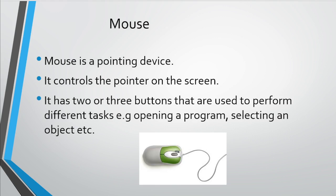A mouse is moved on a flat surface to control the movement of the cursor. A mouse has two or three buttons and these buttons are used to perform different tasks, for example, opening a program, selecting an object, etc.